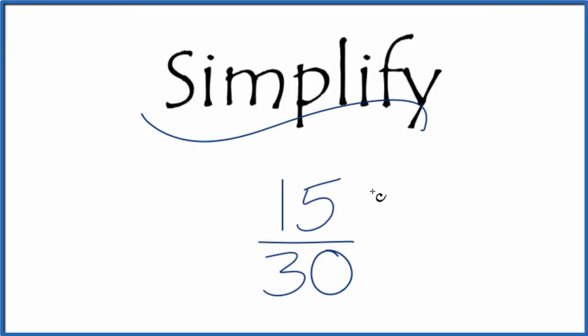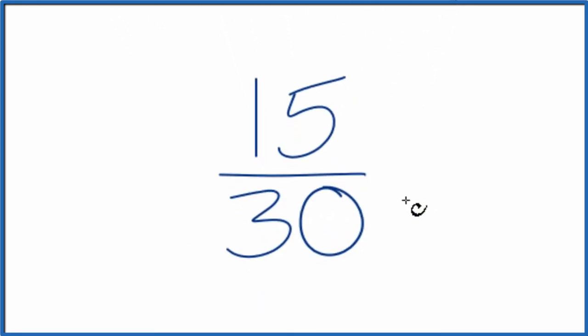Let's simplify the fraction 15 over 30. Our goal here is to take this fraction 15 over 30 and reduce it to its lowest terms. We want to find a fraction that's equal to 15 over 30—an equivalent fraction, but in lowest terms.